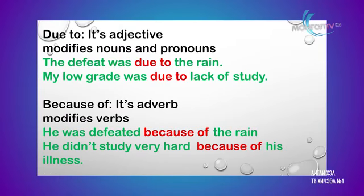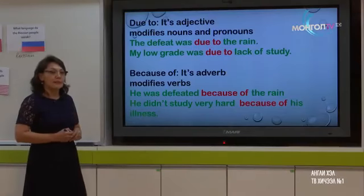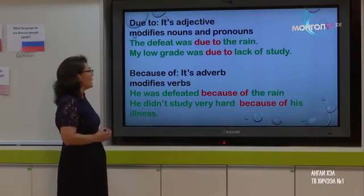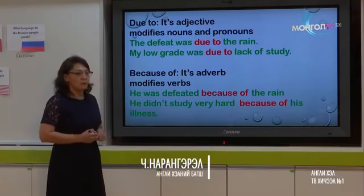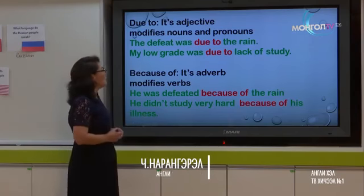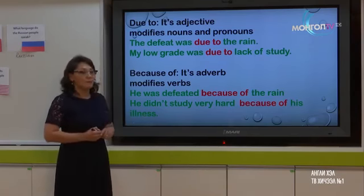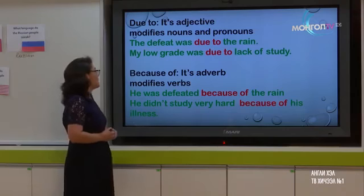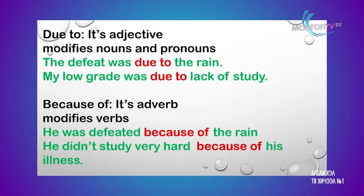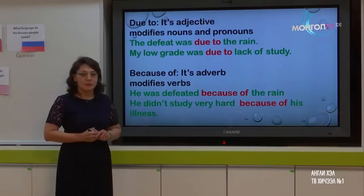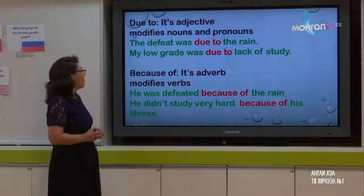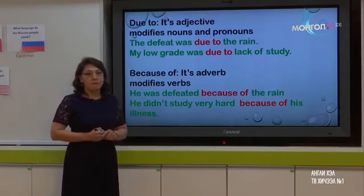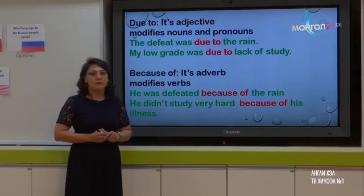For example: 'The defeat was due to the rain.' Here 'rain' is a noun and 'the defeat' is a noun phrase, so 'due to' modifies it. Second example: 'My low grade was due to the lack of study.' Same as the previous sentence — 'due to' is modifying the noun phrase 'my low grade'.